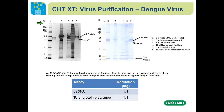A silver stain SDS-PAGE gel of the various fractions shows that fraction six — the eluate off CHT — is very highly purified compared to the load material, containing the E protein and NS1 protein, two key dengue virus proteins. A western blot confirms the NS1 protein, the E protein, and the core protein.